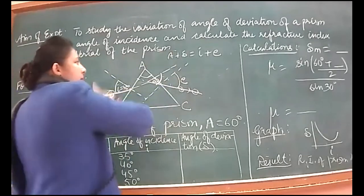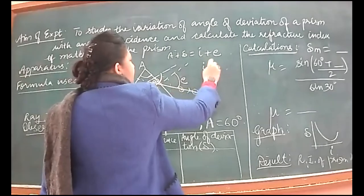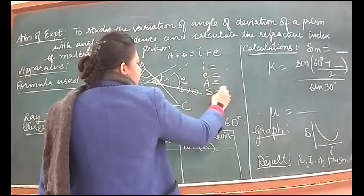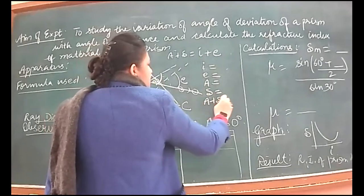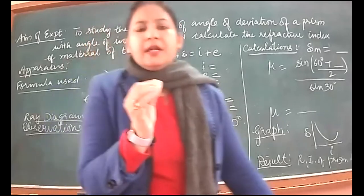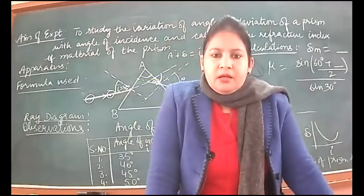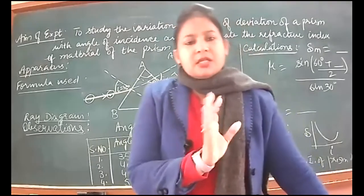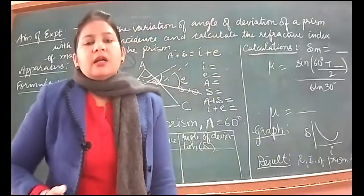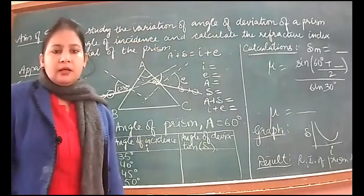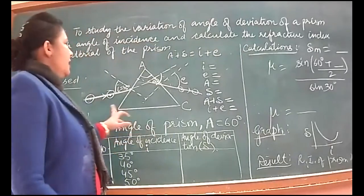So these are our observations. We will write on the same paper piece: I, E, and delta. Below that we'll write A plus delta and I plus E. If there's a two to three degree difference, that's acceptable. If the difference is more than that, it means there's too much deviation, which means you haven't placed the pins correctly.